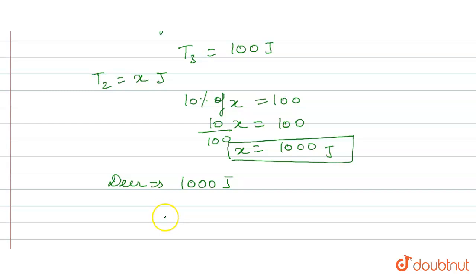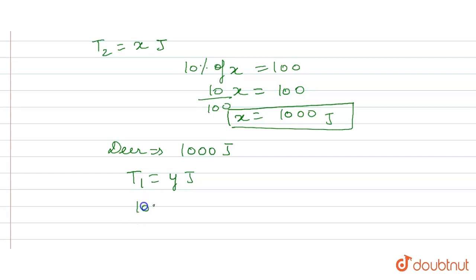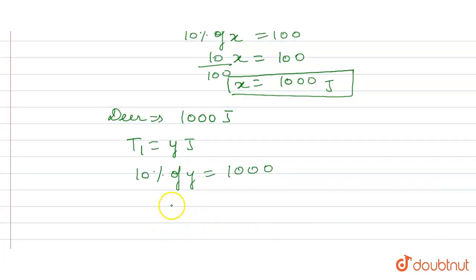Now we will use the same formula to find how much energy plants had. We think that plants have Y joules of energy. Now 10% of Y is equal to 1000. 10% of energy from Y, which is plants, was transferred to the deer.